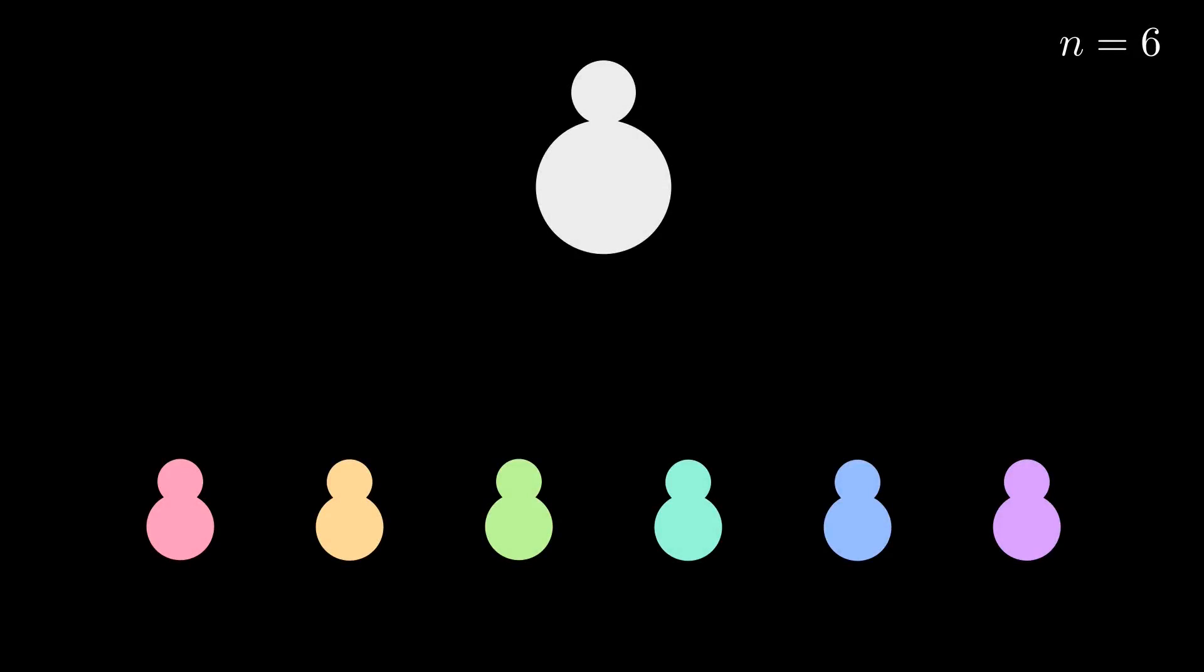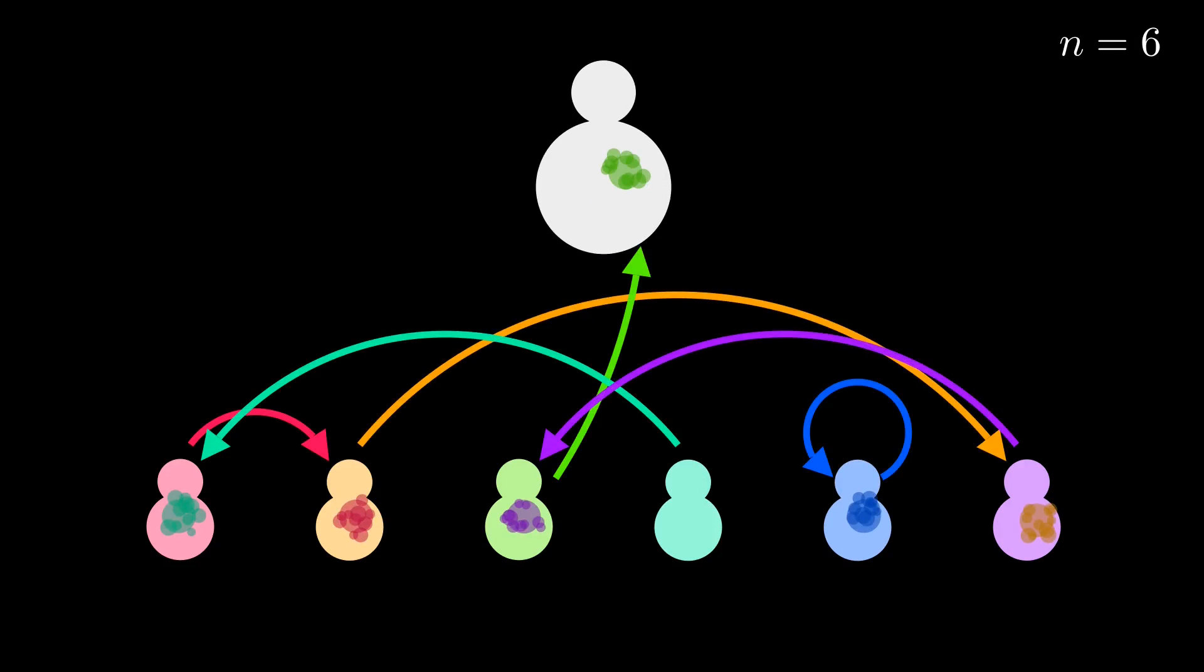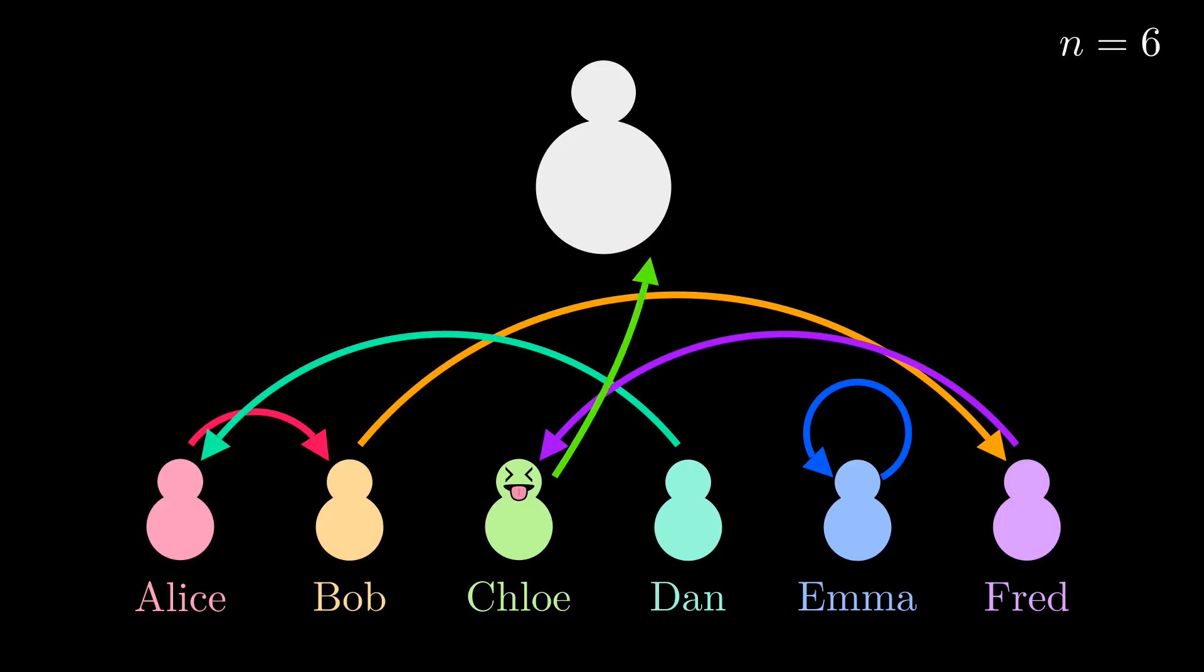For the second case, exactly one child chose to throw at the adult. Our injection needs to map every possible fight where exactly one kid targets the adult to a fight where nobody aims at the adult, in such a way that we can reverse that mapping and recover the original fight. Let's name all the kids so we can tell them from each other, and call the kid who threw at the adult the rascal. Our map keeps most balloon throws the same, but we need to change who the rascal is aiming at. We'll need to be a bit clever about how we change the kid's targets. If we just have the rascal aim at an arbitrary kid, now we can't recover the original fight because we don't have a way to identify who the rascal was. So what's the solution? How can we make our reconfiguration reversible? Pause here and see if you can figure it out.